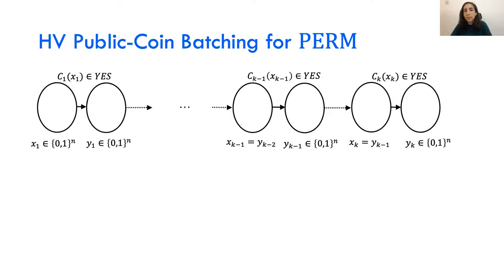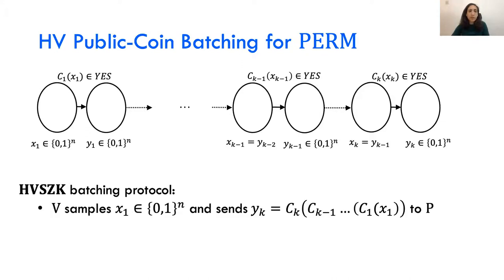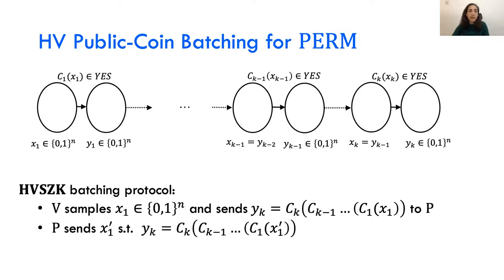We want to construct a batch verification protocol where the input is k circuits and we check that each one is a permutation. We think of the circuits as a composition. We construct an honest verifier ZK batching protocol as follows: the verifier samples x1 and sends y_k — the composition of all circuits on x1 — to the prover. The prover finds some x1' such that the composition of circuits on x1' gives y_k, sends it back, and the verifier checks that x1 equals x1' and accepts or rejects accordingly.